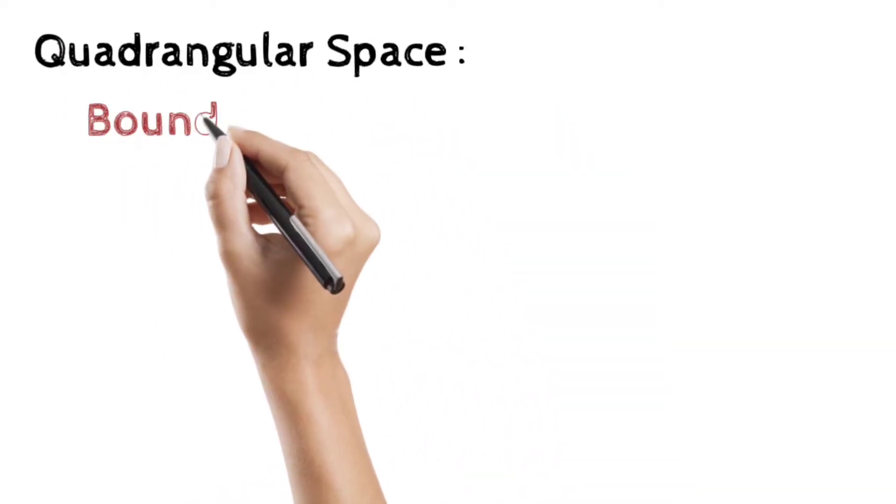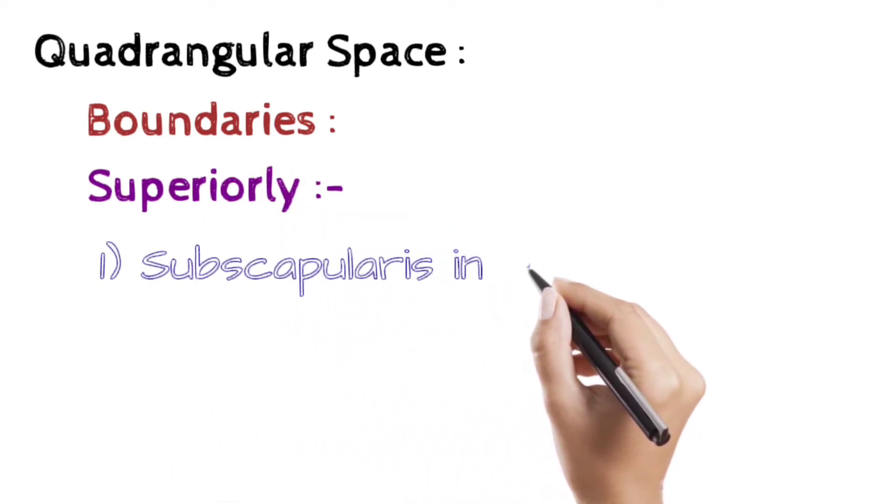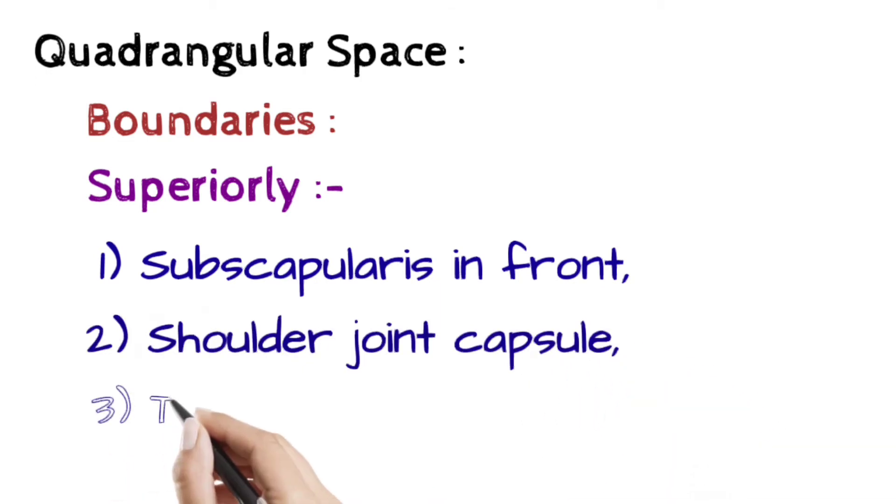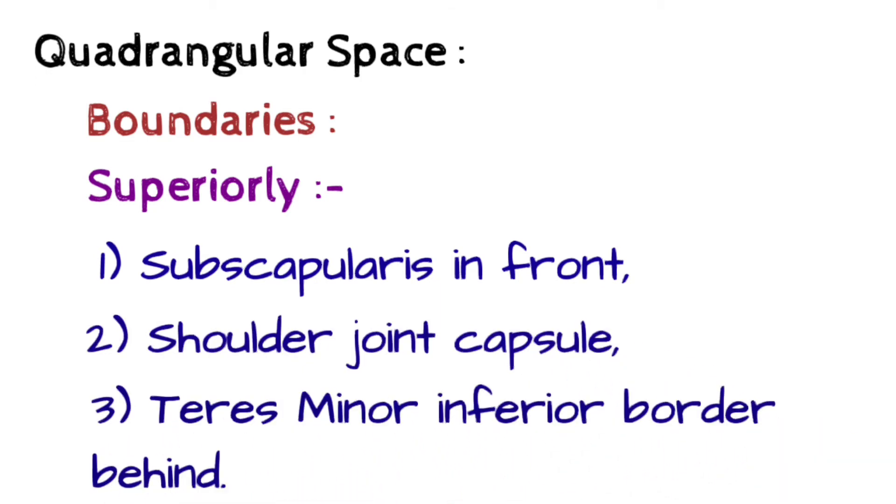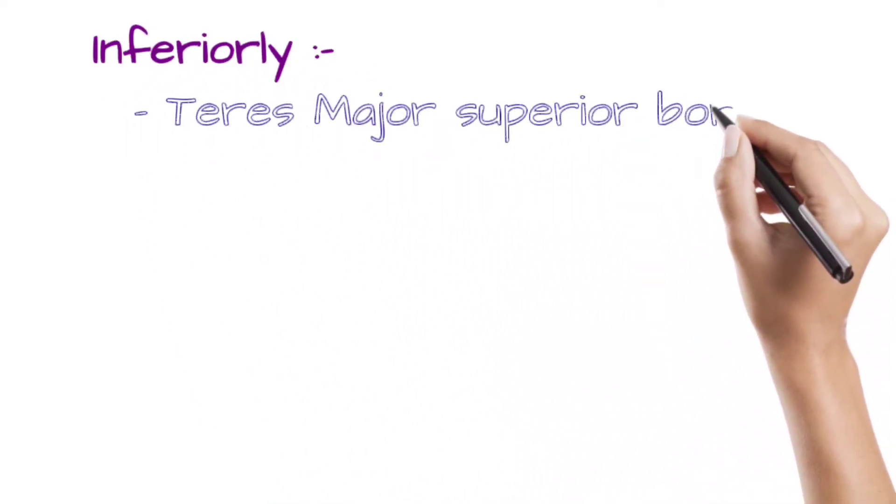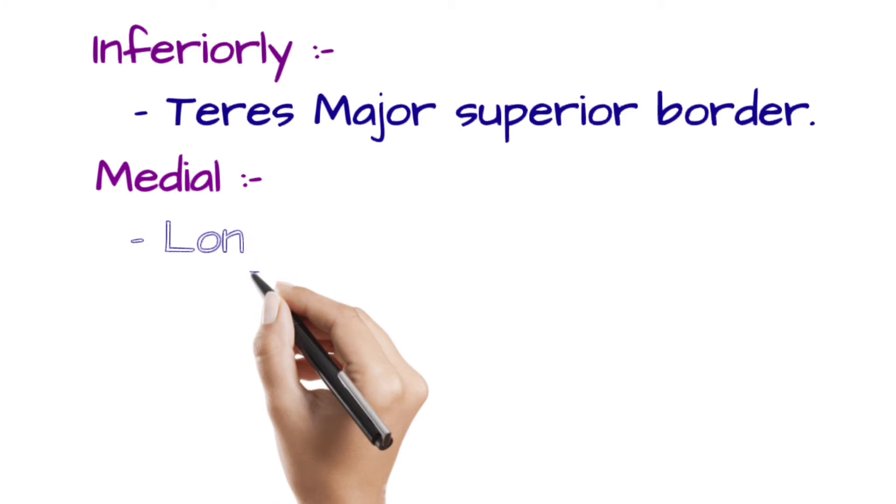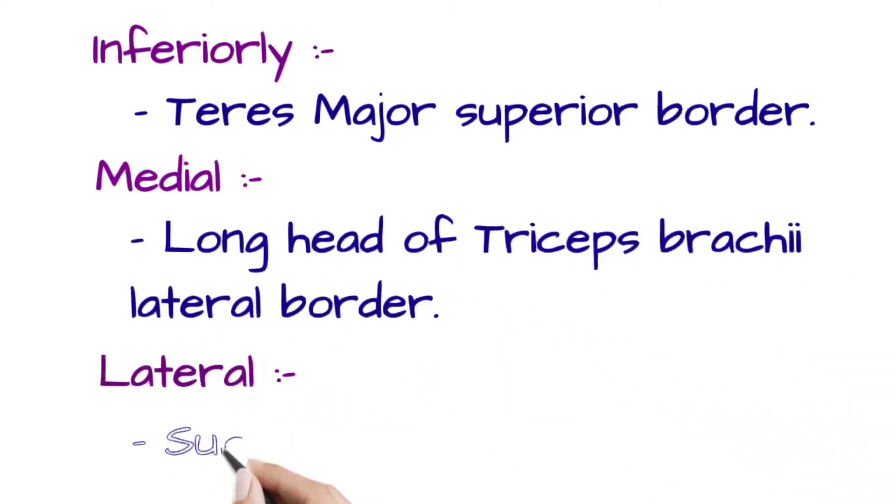Quadrangular space. Boundaries: Superiorly, subscapularis in front, shoulder joint capsule, teres minor inferior border behind. Inferiorly, teres major superior border. Medially, long head of triceps brachii lateral border. Laterally, surgical neck of humerus.